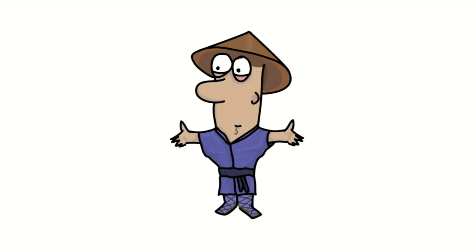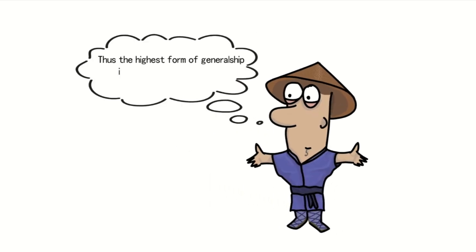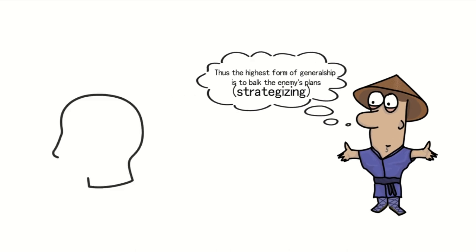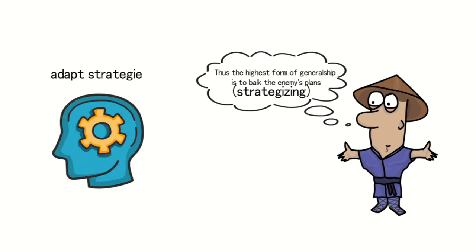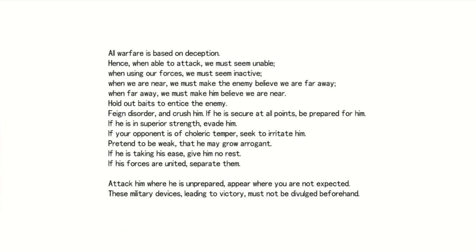Sun Tzu stated, Thus the highest form of generalship is to balk the enemy's plans. Here, balk the enemy's plans refers to strategizing, which is the superior approach to achieving victory. Therefore, we must continually adapt our strategies to meet the demands of battle in order to overcome our adversaries. Only by doing so can we realize the ultimate objective of Sun Tzu's famous saying, All warfare is based on deception.